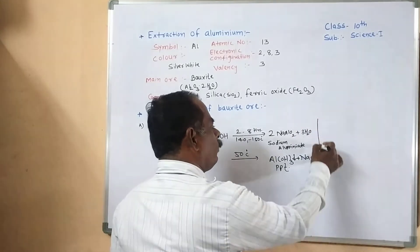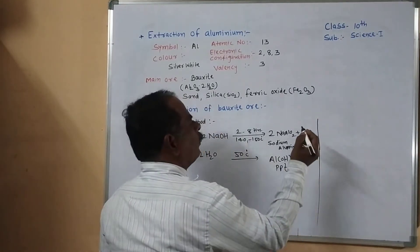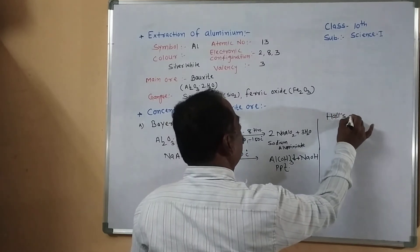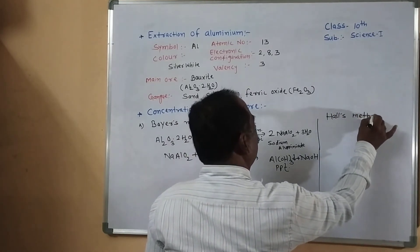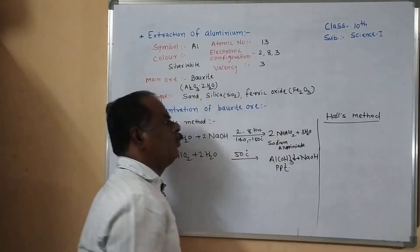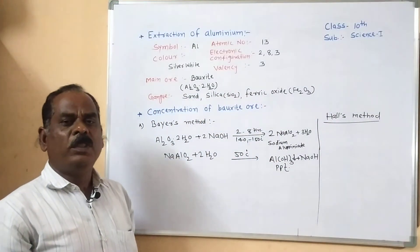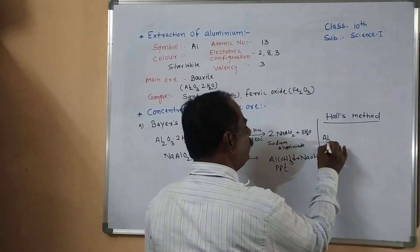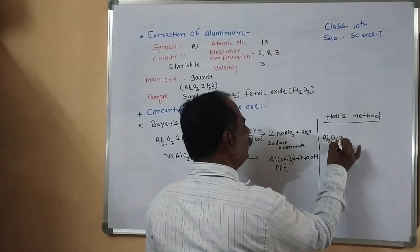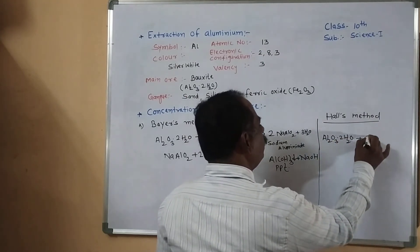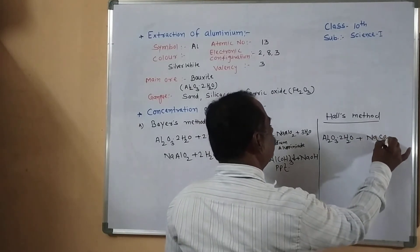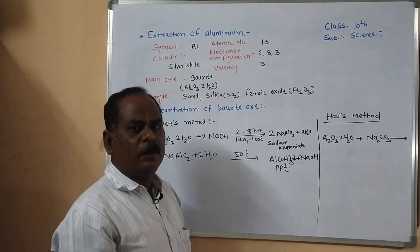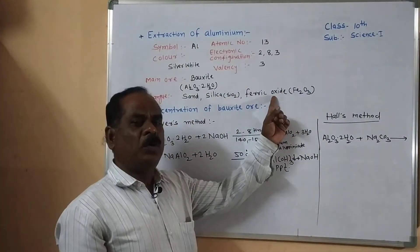The second method for concentration of bauxite is the Hall process or Hall method. In the Hall method, the bauxite ore is leached with sodium carbonate. The bauxite Al₂O₃ powder is made and leached with sodium carbonate. Aluminum reacts with sodium carbonate, but the impurity gangue ferric oxide does not react.